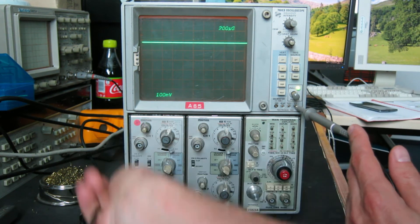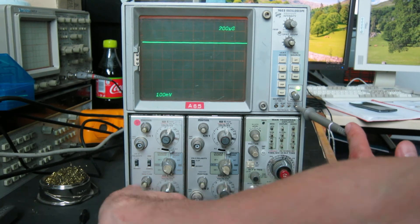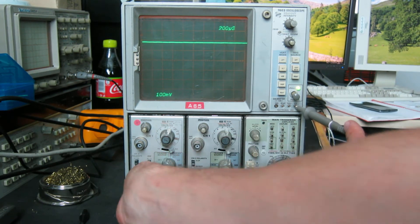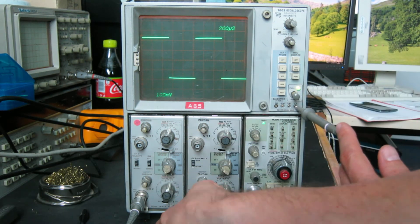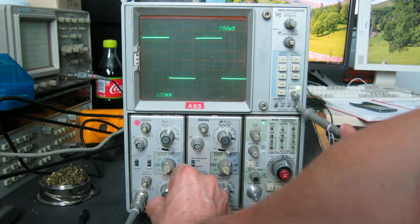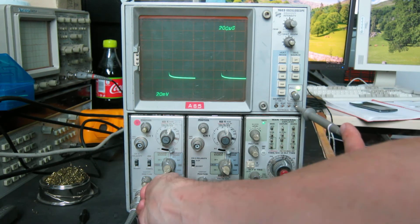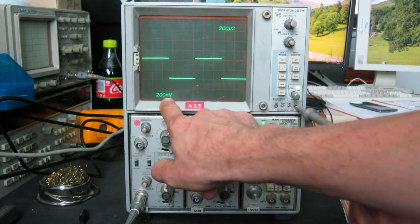Test the other one, channel 2. Let's have a look. I want to change trigger source to channel 2, there we go. Nice and stable, and the attenuator settings all work, notice the readout's OK.